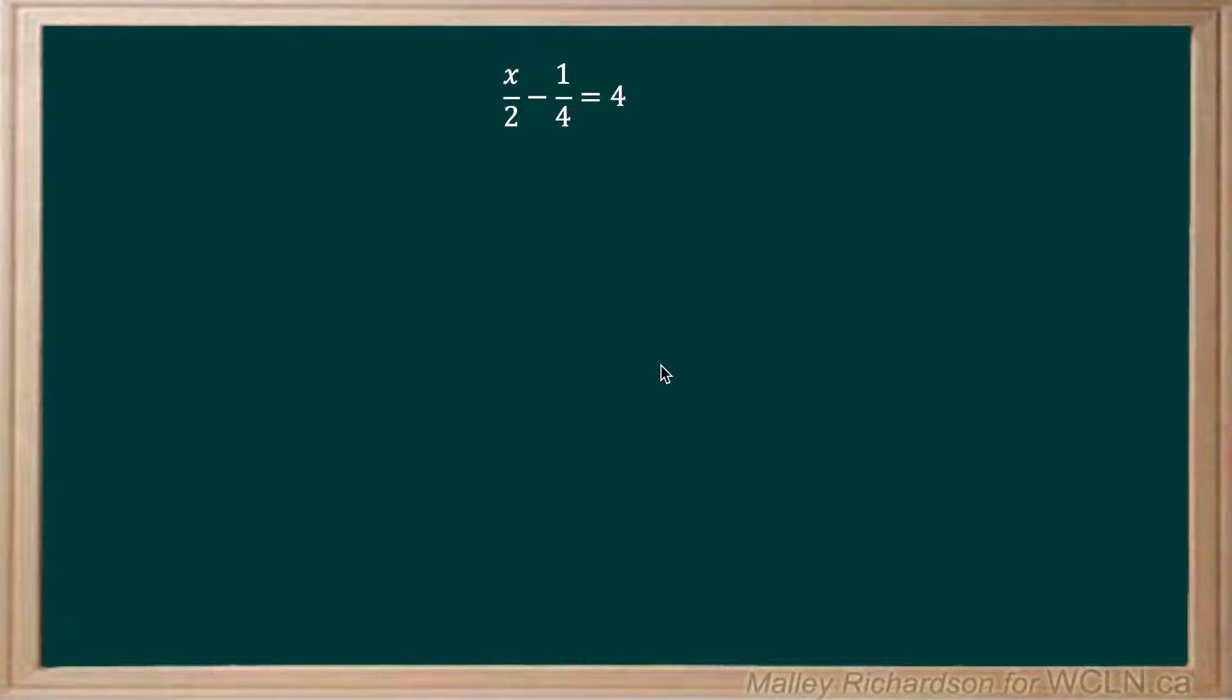So to solve for x, we first want to get rid of these fractions. To do this, we need to find the lowest common denominator of 2 and 4. Well, that would just simply be 4.